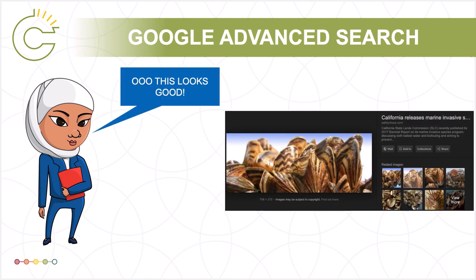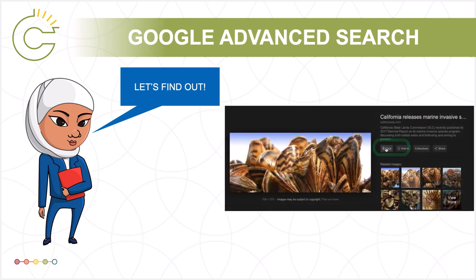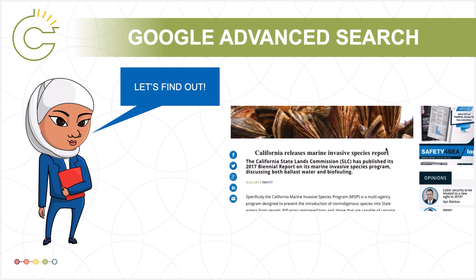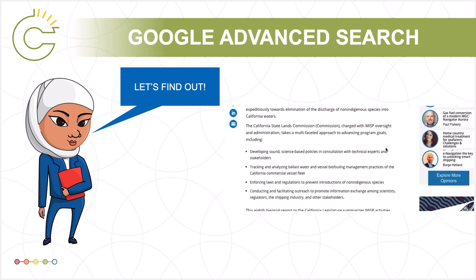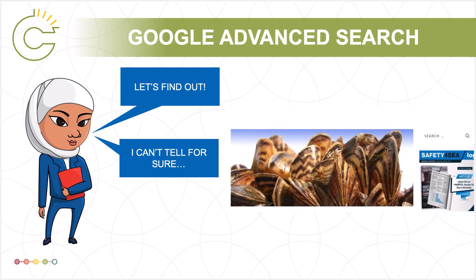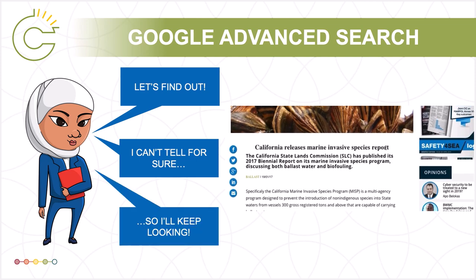Ira has found a picture of zebra mussels with her Google search. Even though she was specifically searching for images that were labeled for reuse, she decides she should make sure. So she clicks the visit link to go to the site where the image was posted. There isn't a copyright notice or a terms of use statement associated with that picture. Ira isn't sure that this image wasn't shared without the rights holder's permission, so she decides she should look for an alternative.